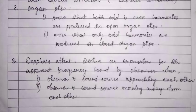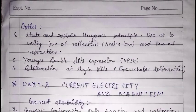Moving to the second sub-unit — optics — the important derivations are: state and explain Huygens' principle, verify the law of reflection and law of refraction using Huygens' principle. Also very important is Young's double slit experiment, and derivation for single slit diffraction.